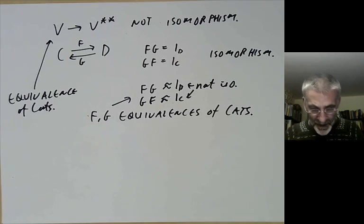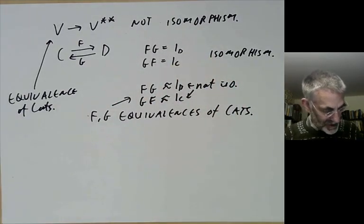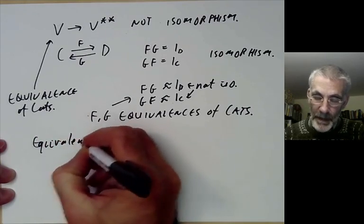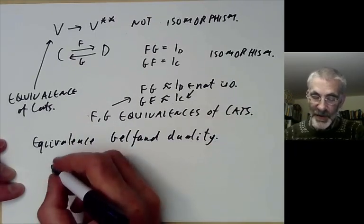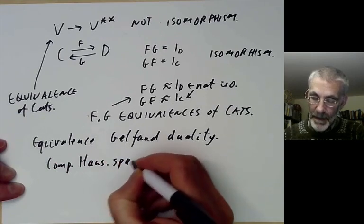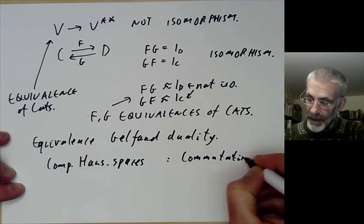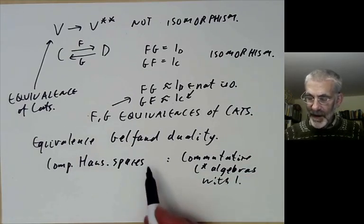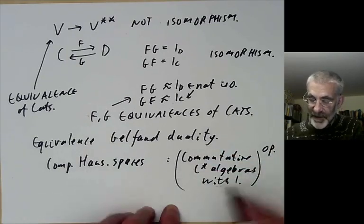The nice notion of two categories being essentially the same is equivalence, since strict isomorphism is too strong. A very nice example is Gelfand duality: an equivalence of categories between the category of compact Hausdorff spaces and commutative C*-algebras with identity. It's actually an equivalence between one category and the opposite of the other, because the correspondence reverses arrows.